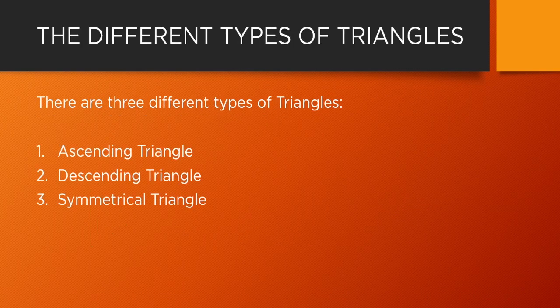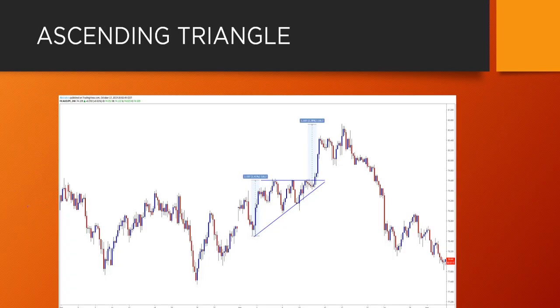What are the different types of triangles we have in trading? We have an ascending triangle, a descending triangle, and a symmetrical triangle. We're going to look at each one — how they look, what the rules are, and most importantly how to trade them: entry levels, targets, and stop losses. Let's start with the ascending triangle first.